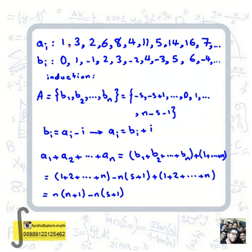We get 2 + 3 + 1 = 6, so next we need a number such that 6 plus it is a multiple of 4. 6 + 2 is a multiple of 4, but we've already chosen 2, so we put 6. Continuing, we find bi = ai - i: 1-1=0, 3-2=1, 2-3=-1, 6-4=2, 8-5=3, 4-6=-2.